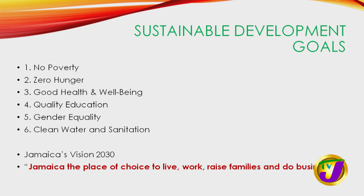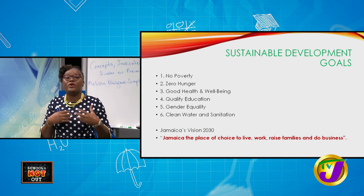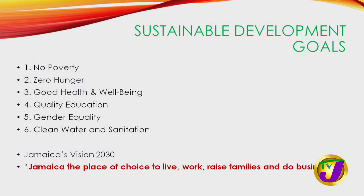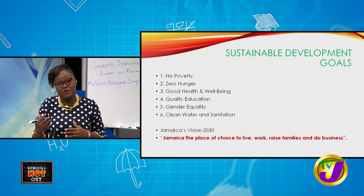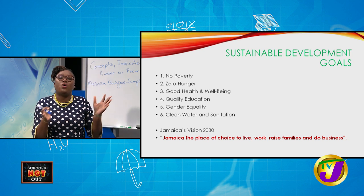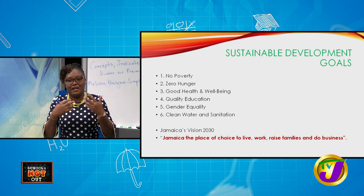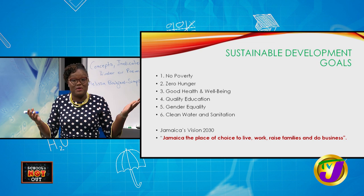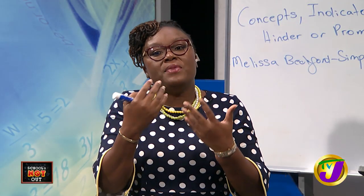There are what we call SDGs — Sustainable Development Goals — and there are 17 of them. A few are: number one, no poverty; two, zero hunger; three, good health and well-being; four, quality education; five, gender equality; and six, clean water and sanitation. These are goals — where we want to be. Jamaica's Vision 2030 is coined from the SDGs: 'Jamaica, the place of choice to live, work, raise families and do business.'